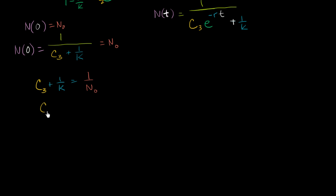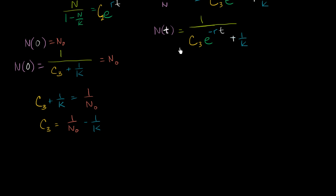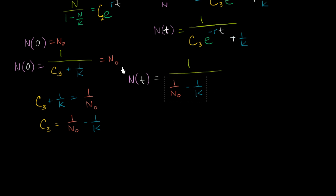So we can rewrite our solution — the logistic function — as n(t) = 1 over [(1/n₀ − 1/k)·e^(−rt) + 1/k]. To clear the fractions in the denominator, multiply numerator and denominator by n₀k.